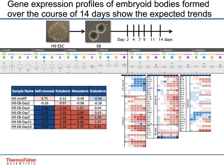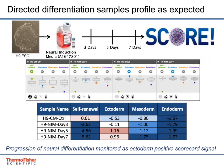This slide shows directed differentiation of cells into ectoderm in monolayer culture. The three-day time point is too early, but the cells are positive for ectoderm at day five and day seven. H9 cells were differentiated into NSCs using Gibco PSC neural induction medium, denoted here as NIM, and scorecard analysis was performed at various time points. The control sample is undifferentiated H9 ESC.